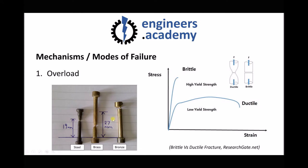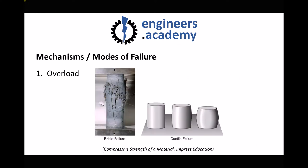On the left hand side we have test specimens from UTS tests. The most obvious example of ductile fracture is our brass in the centre, where we see significant elongation, necking, and failure at the centre. Our best example of brittle fracture is our bronze, where we see a sudden fracture with very little necking. We can also get overload failure due to compression — a brittle fracture on the left hand side shows sudden fracture with very little plastic deformation, while on the right hand side a ductile failure shows significant plastic deformation. Although the material may not rupture, it's obviously failed because it's no longer fit for purpose.